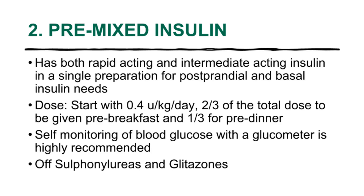Premixed insulin consists of both rapid and intermediate-acting insulin in a single preparation, covering both post-prandial glucose excursion and basal insulin needs. Begin with a total dose of 0.4 units per kilogram per day — two-thirds given pre-breakfast and the remaining one-third at pre-dinner. Self-monitoring of blood glucose is highly recommended. Do not forget to stop sulfonylureas and pioglitazones to reduce the risk of hypoglycemia.